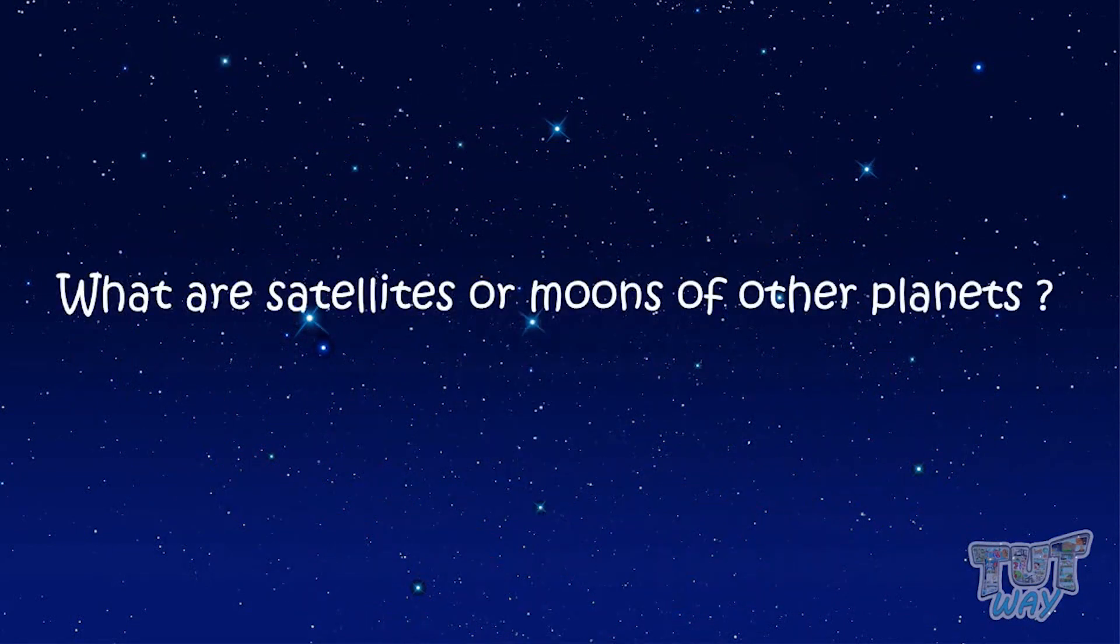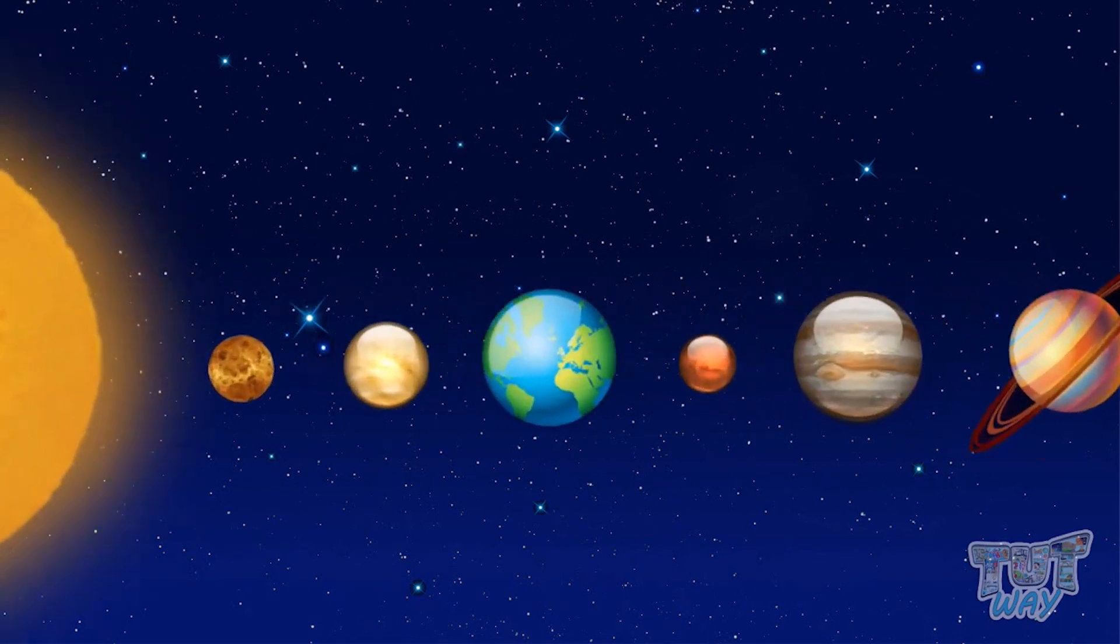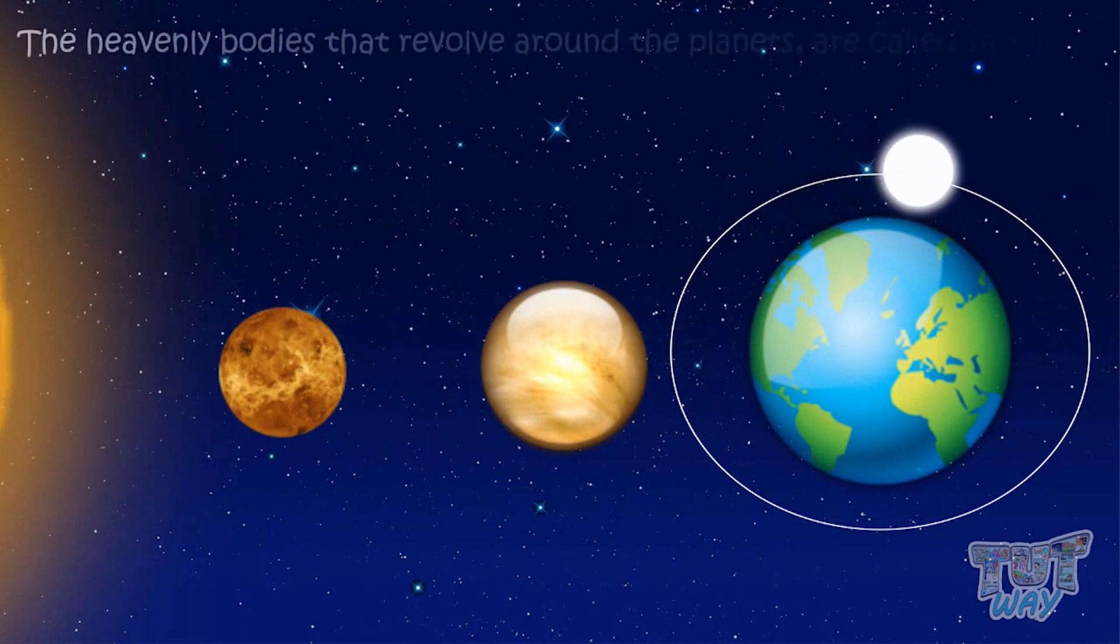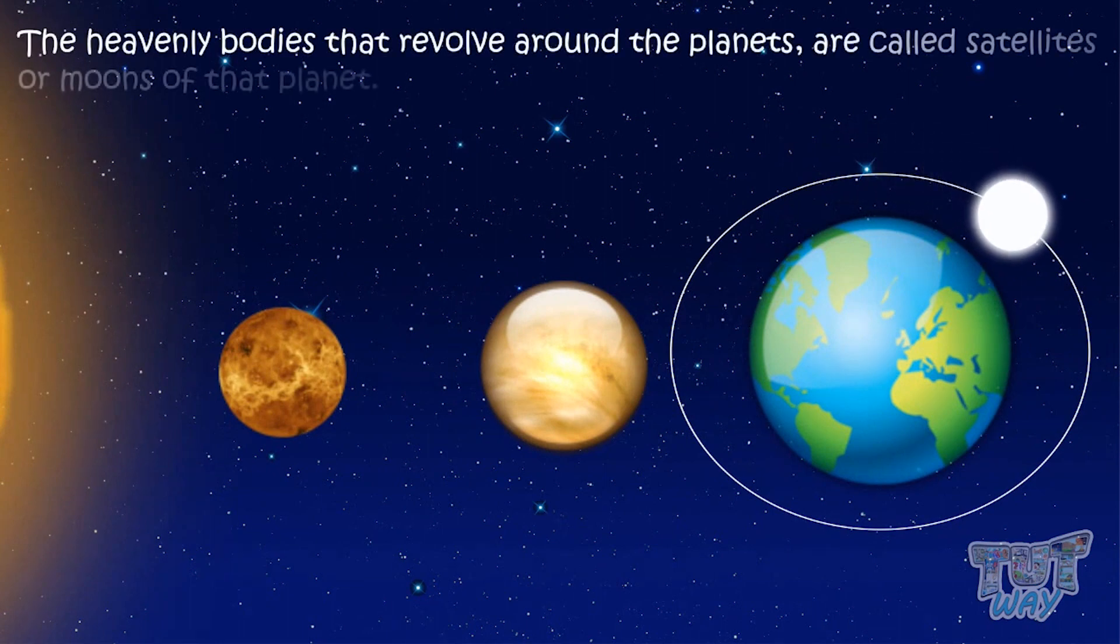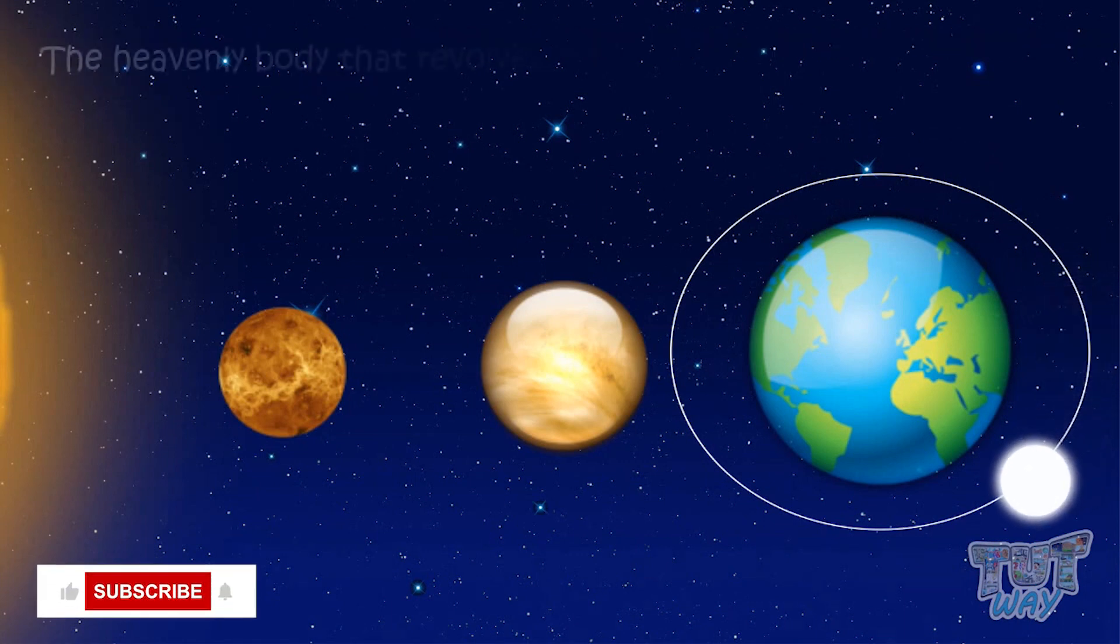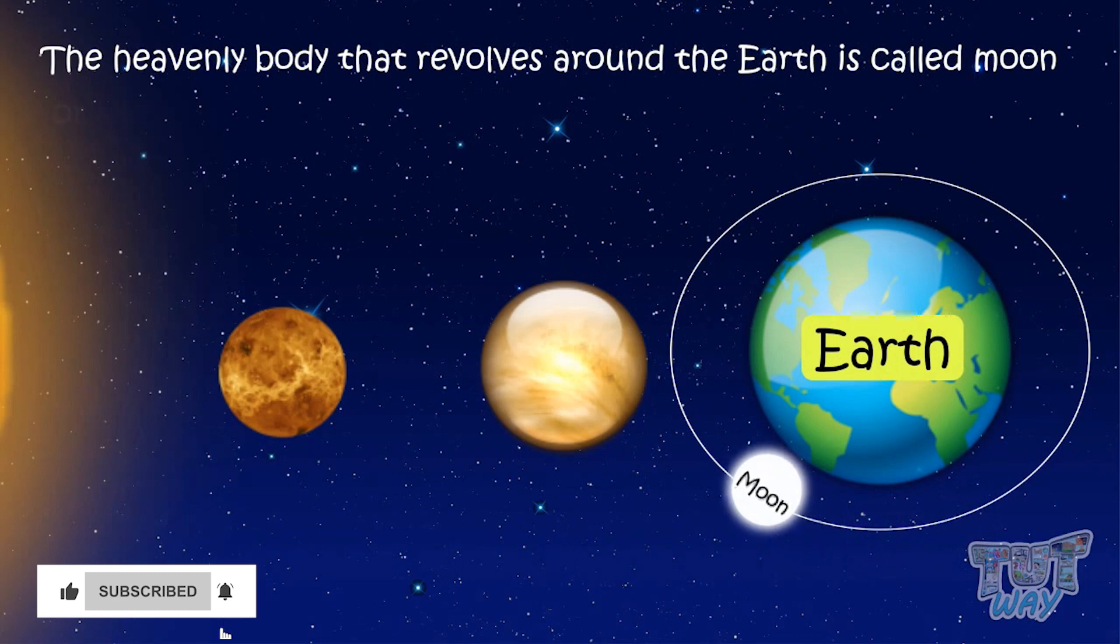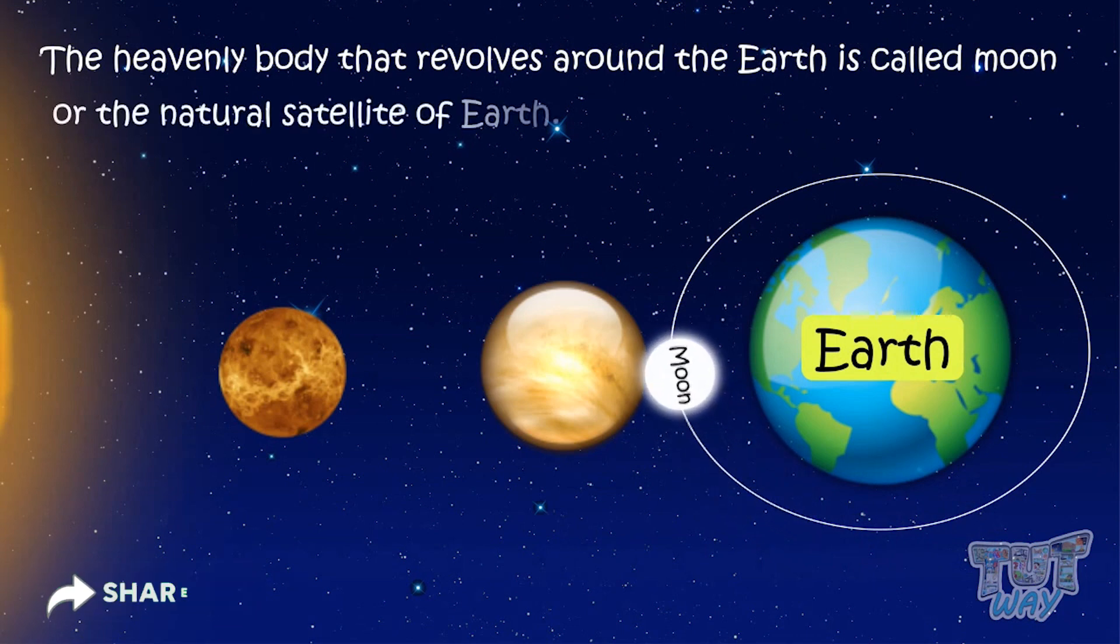Now let's see what are satellites or moons of other planets. Heavenly bodies that revolve around the planets are called satellites or moons of that planet. Like, the heavenly body that revolves around the Earth is called the moon or the natural satellite of the Earth.